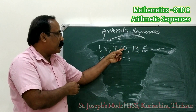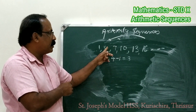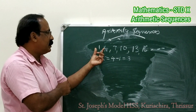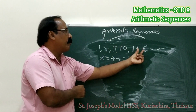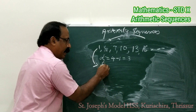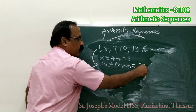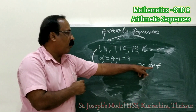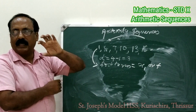First term plus common difference is the second term. Second term plus common difference is the third term. Third term plus common difference is the fourth term. Similarly, fourth term minus common difference: 10 minus 3 equals 7, which is the third term. Third term minus common difference is 4. So the common difference is the difference of any two consecutive terms — fourth minus third, fifth minus fourth, and so on. The first number is known as the first term, represented by either x1 or f.